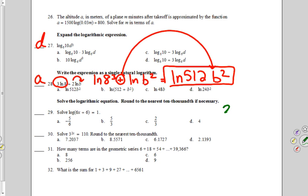Okay, number 30 wants us to solve 3 to the 2x power equals 110. So the variable that we're solving for is in the exponent, and to undo that, we learned about logarithm.